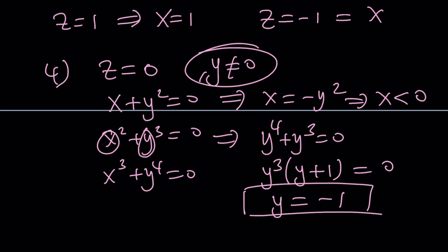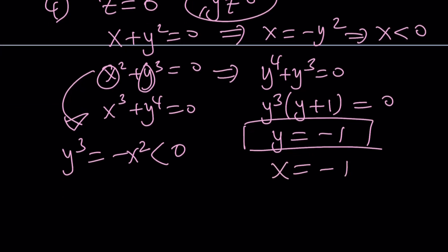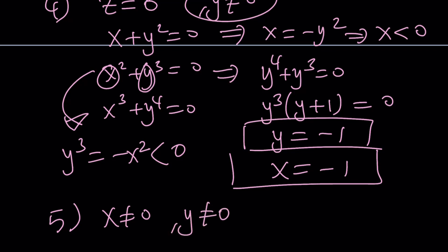When y is negative one, x is also negative one, and in this case z equals zero. That gives us the ordered triple (−1, −1, 0). Now let's go ahead and take a look at case number five, which is where all variables are different from zero — x is not zero, y is not zero, z is not zero. This is the most interesting case.